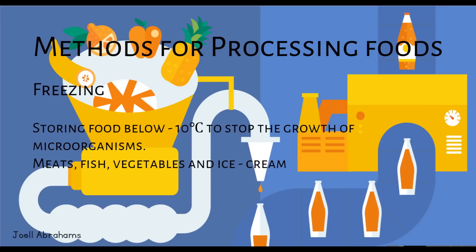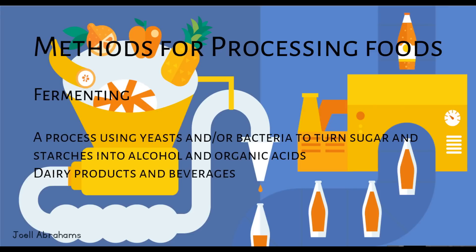Freezing — storing food below -10 degrees to stop the growth of microorganisms. Examples include meat, fish, vegetables and ice cream. Fermenting — a process using yeast or bacteria to turn sugars and starches into alcohol and organic acids. Examples include dairy products and beverages.